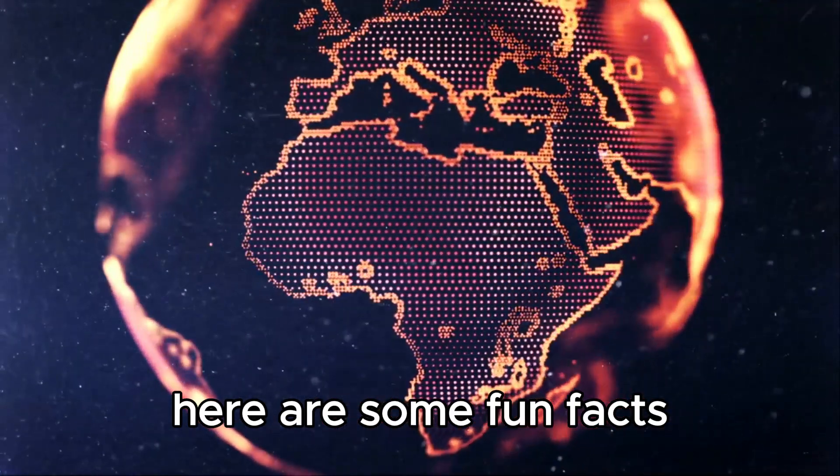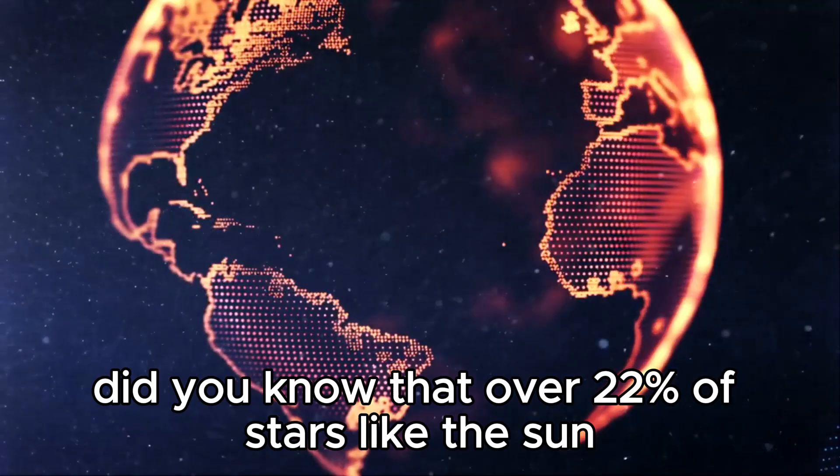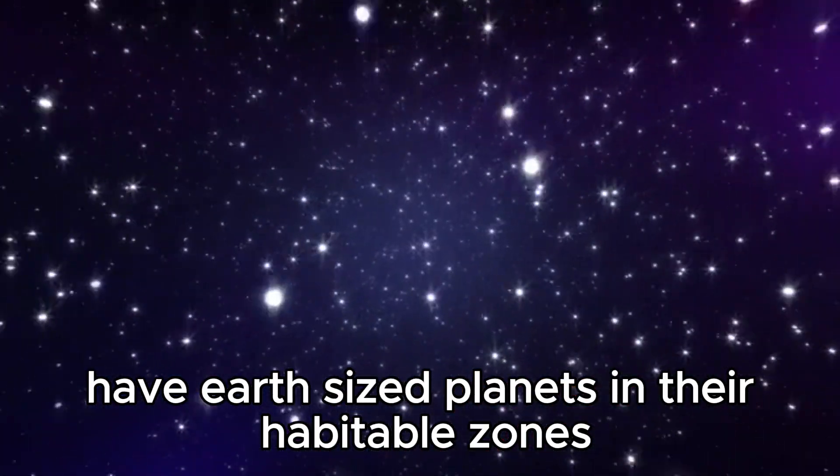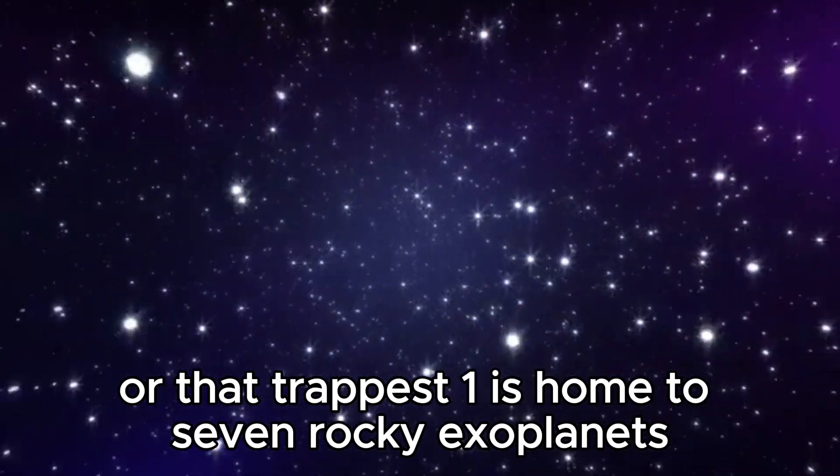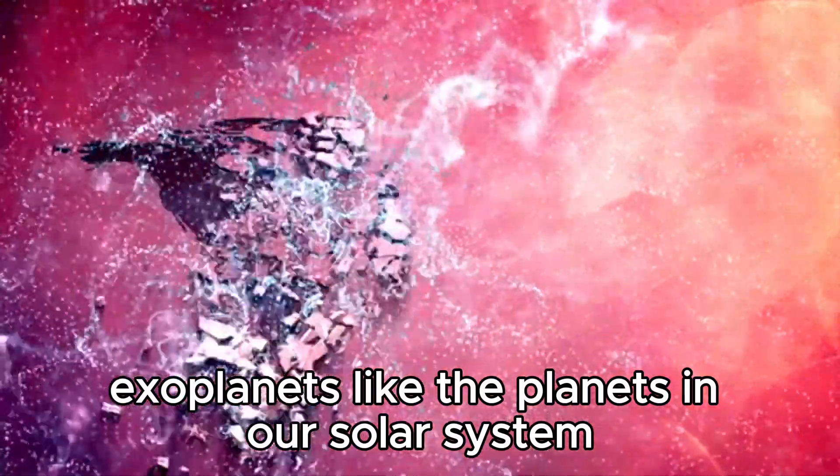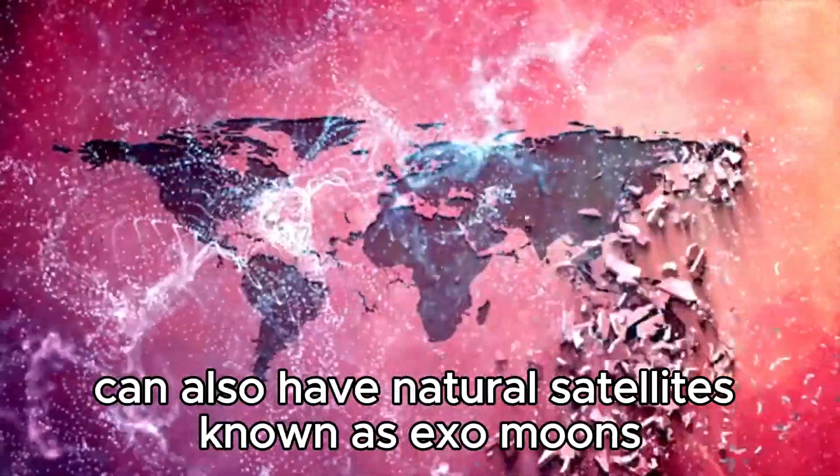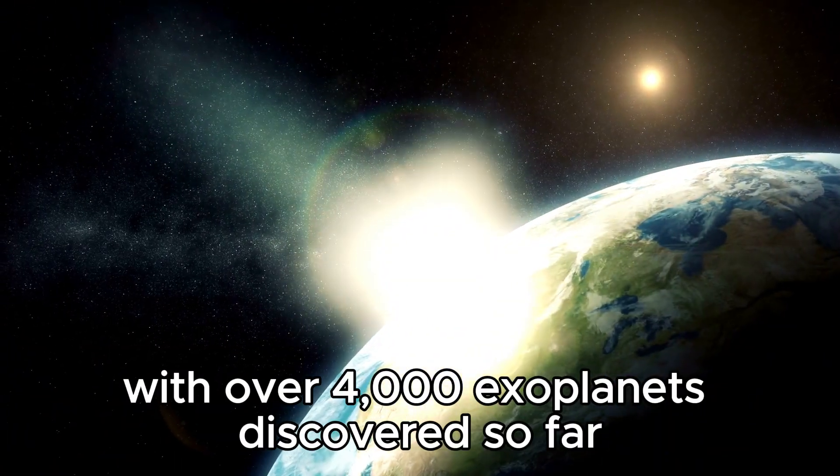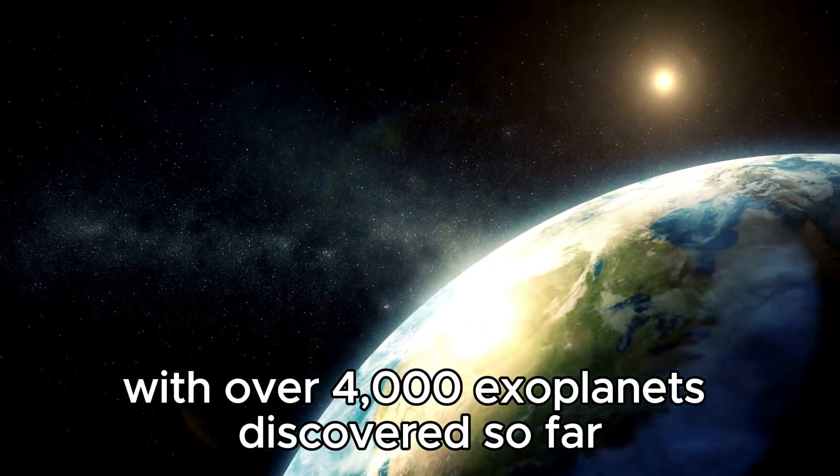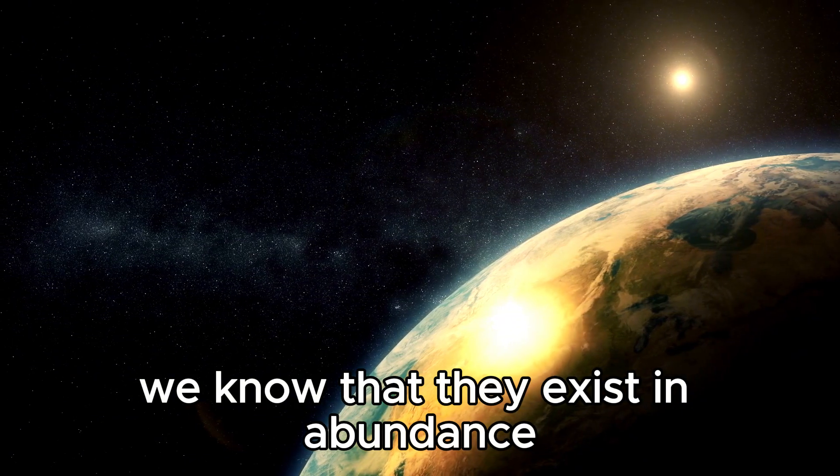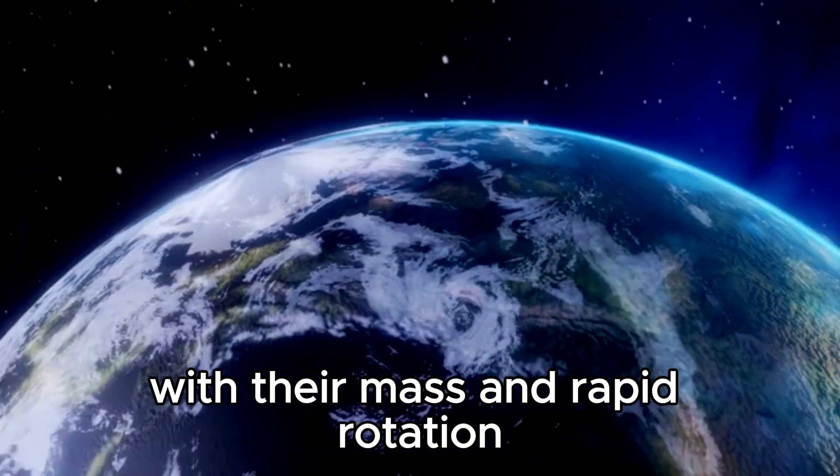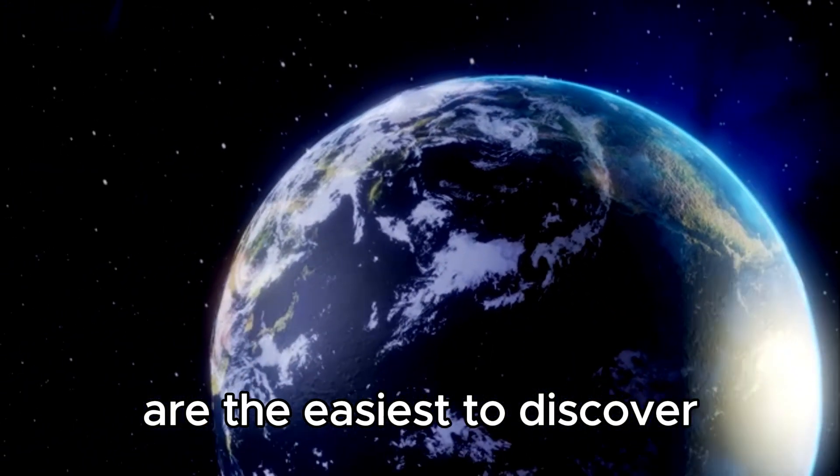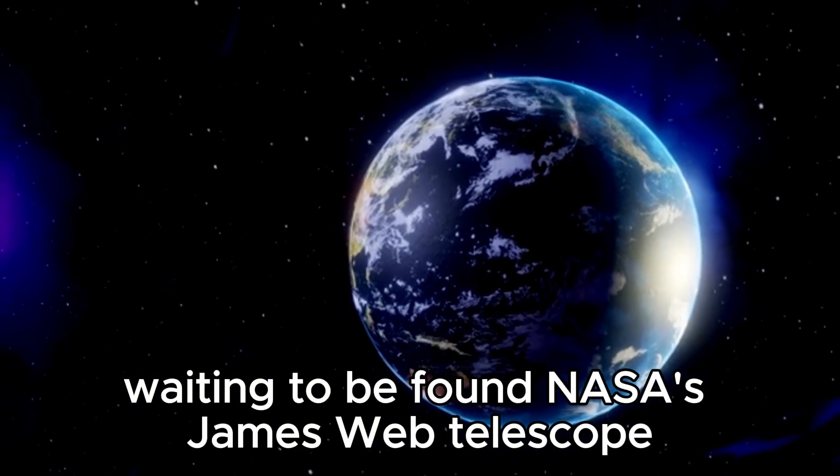Here are some fun facts. Did you know that over 22% of stars, like the Sun, have Earth-sized planets in their habitable zones? Or that TRAPPIST-1 is home to seven rocky exoplanets with water on their surfaces? Exoplanets, like the planets in our solar system, can also have natural satellites known as exomoons. With over 4,000 exoplanets discovered so far, we know that they exist in abundance throughout the universe. Hot Jupiters, with their mass and rapid rotation, are the easiest to discover, but there are countless other exoplanets waiting to be found.